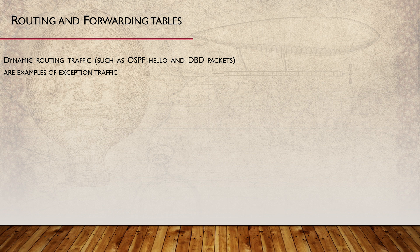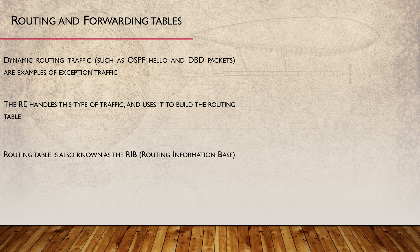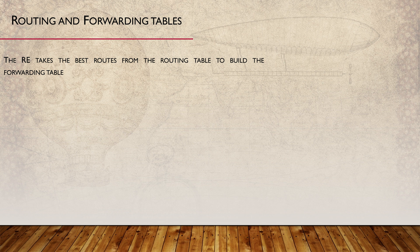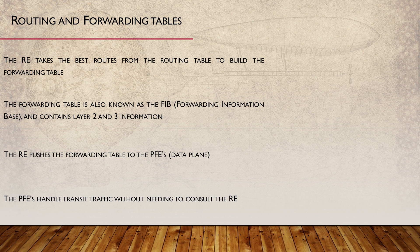This leads us into considering how routing and forwarding works with this split between the RE and the PFE. Routing information, such as OSPF or BGP, comes from neighbor routes — this is exception traffic and needs to be handled by the RE. The RE will take this information, along with static, connected, and local routes, and will build the routing table. The routing table, also known as the routing information base or RIB, contains valid routes to reach destination networks. This is maintained by the RE, so you can think of the routing table as part of the control plane. The RE will take all the best routes from the routing table and use them to build the forwarding table, also known as the forwarding information base or FIB. The RE will push a copy of the forwarding table to the PFE. Using this table, the PFE can make forwarding decisions for transit traffic without consulting the RE. We can see then that the forwarding table is part of the data plane.